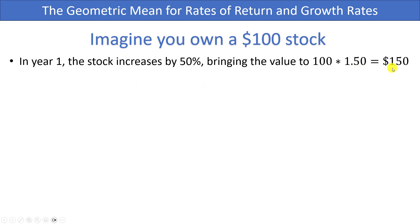That has brought the value to 100 times 1.5 which is $150. But then year two comes around and doesn't do quite as well - it actually decreases by 40%. So to figure out the new value you can take 100% minus 40% to get 60% or 0.6, take your value of 150 and multiply it by 0.6 and you'd be down to $90.